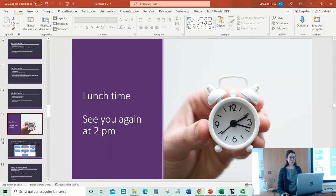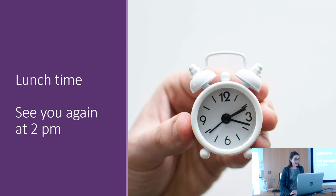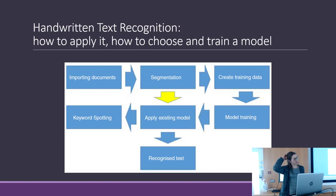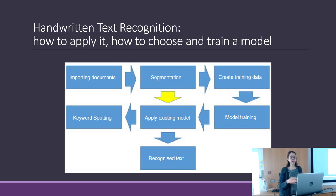This afternoon in the first one hour and a half we will talk about handwritten text recognition, how to apply it, how to choose and train a model. Then we have a 15 minute break and another hour where you can try to apply a good model to our document.